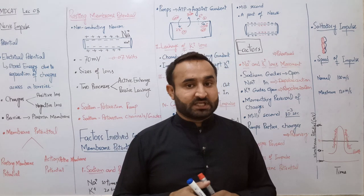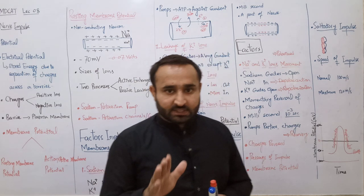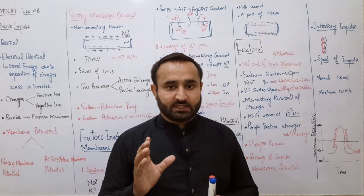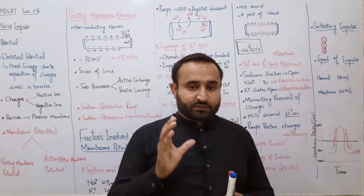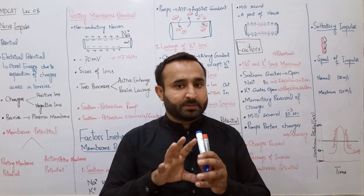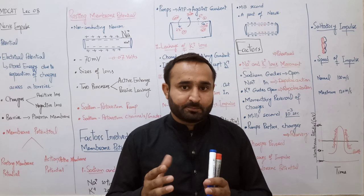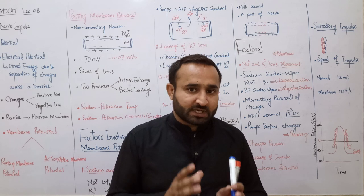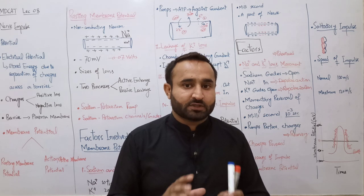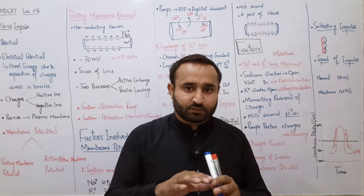Saltatory conduction سے speed of nerve impulse increase ہو جاتی ہے۔ Associative neurons یا interneurons جو کہ CNS بناتے ہیں ان میں myelin sheath نہیں ہوتی کیونکہ وہاں nerve impulse کی speed تھوڑی کم رکھنی ہے تاکہ آنے والی information کو interpret، process اور سمجھا جا سکے۔